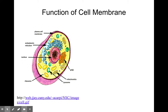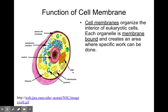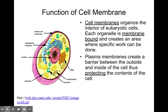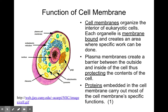Prokaryotic cells also have ribosomes. The function of the cell membrane: it helps to organize the inside of the cell into compartments that do different functions. The plasma membrane, which is on the outside, creates a barrier which protects the cell and stops most things from getting in. The proteins embedded in the cell membrane are really what carry out the specific functions.